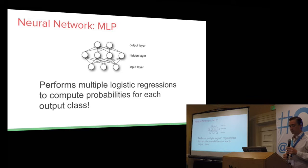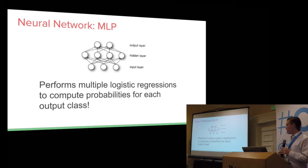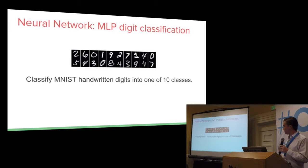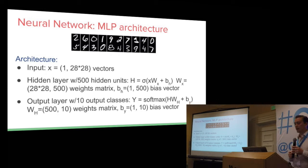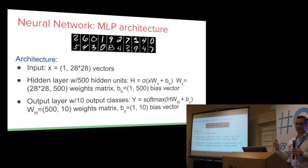The output is a 10-dimensional feature vector where each class is represented as one dimension. The architecture is going to have the input as a 1 by 784 feature. We're going to do something called mini-batch training, so it's actually going to be multiple images fed through the network at the same time just to speed up training. So it's actually going to be a matrix instead of just a single vector.